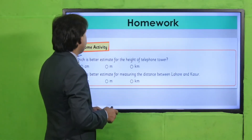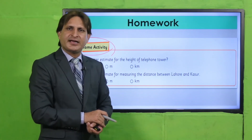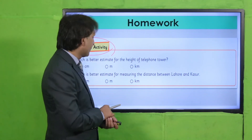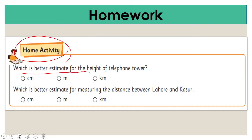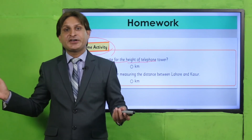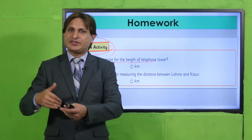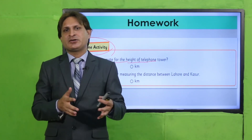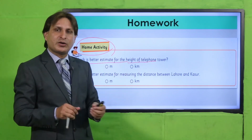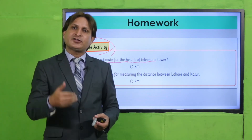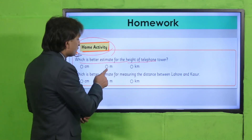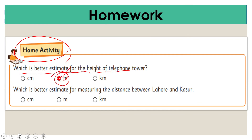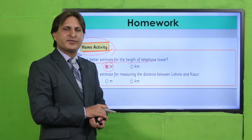Students, ab aajayen homework ki taraf. Homework mein aap logon ne ek home activity perform karni hai aur apni book mein complete karne ke baad teacher ko check karwana hai. Which is the better estimate for the height of a telephone tower — kilometer, meter, ya centimeter? Kilometer toh bahut zyada ho jaayega — woh toh distance between two cities hota hai. Length of door meter mein measure kar sakte hain, aur height of tower ke liye definitely meter use karna padega. So meter wala circle fill kar dena hai. Isi tarah second part bhi complete karein aur teacher ko check karwayen.